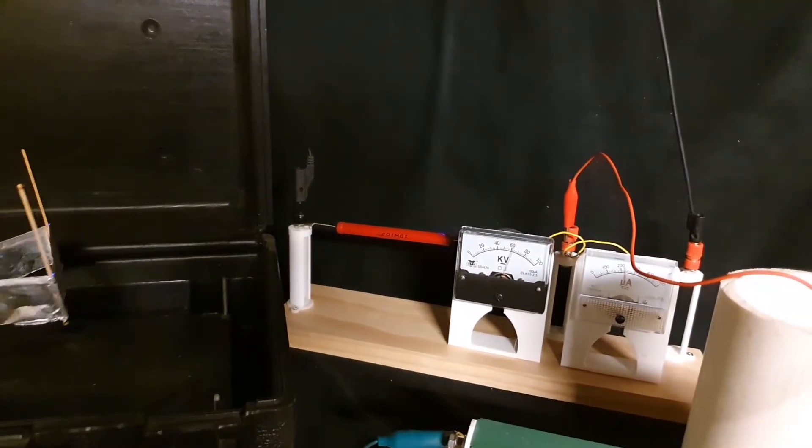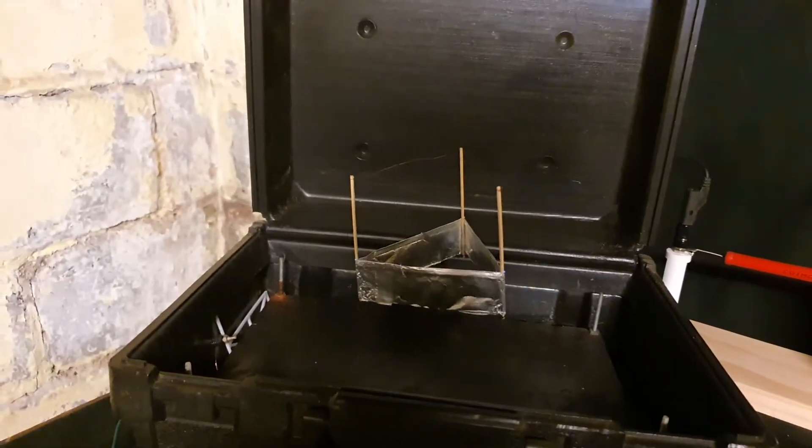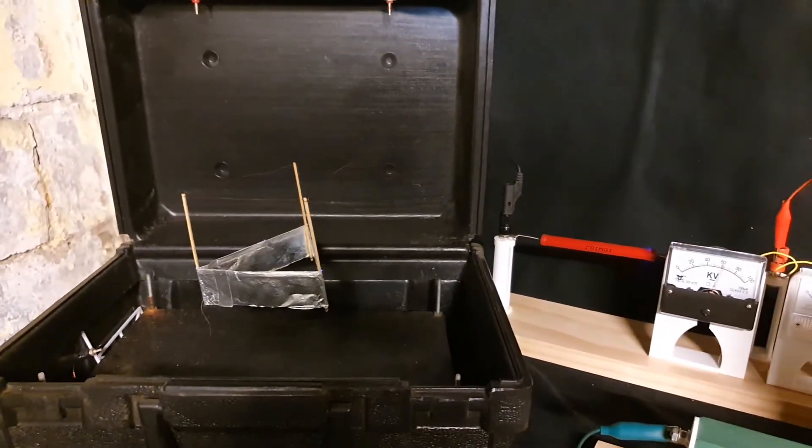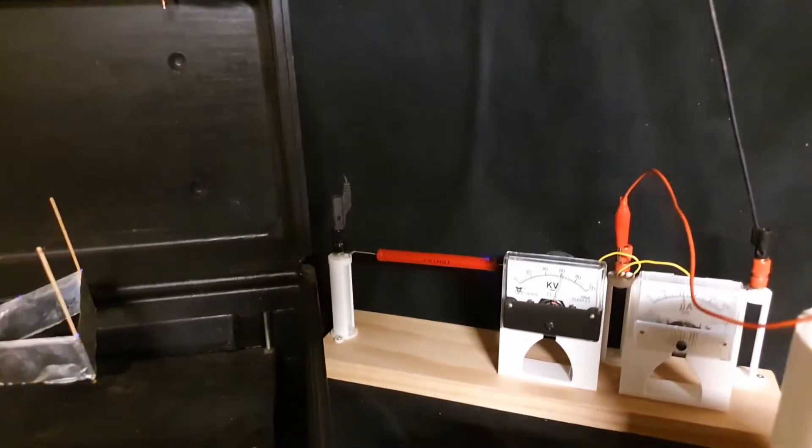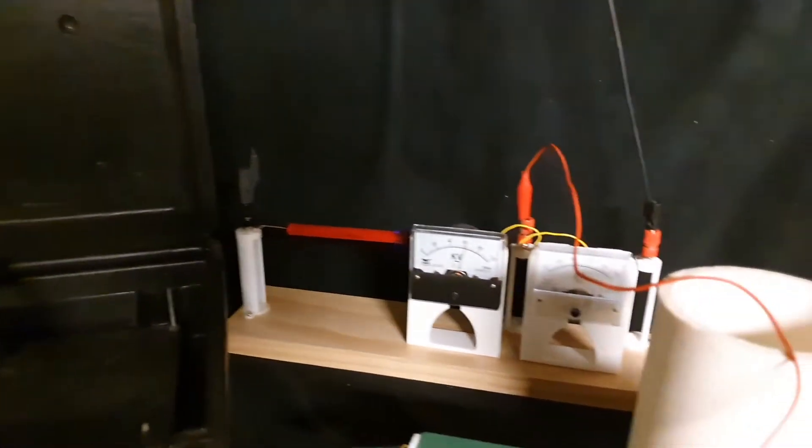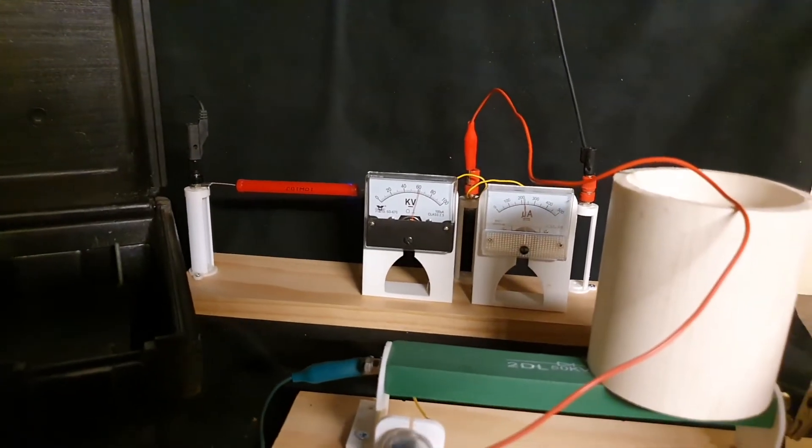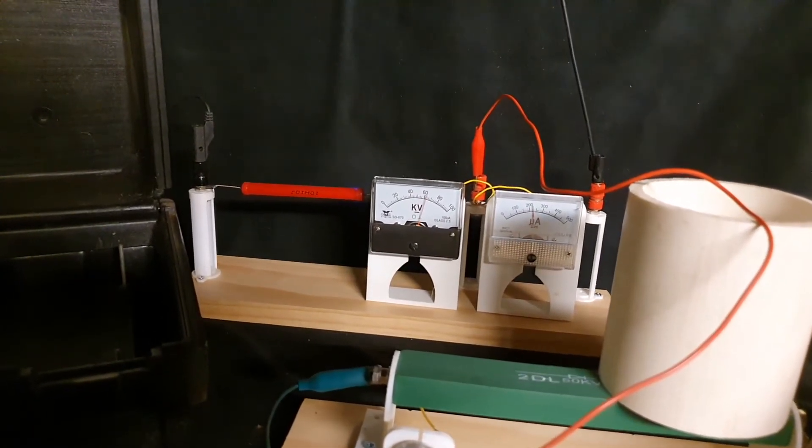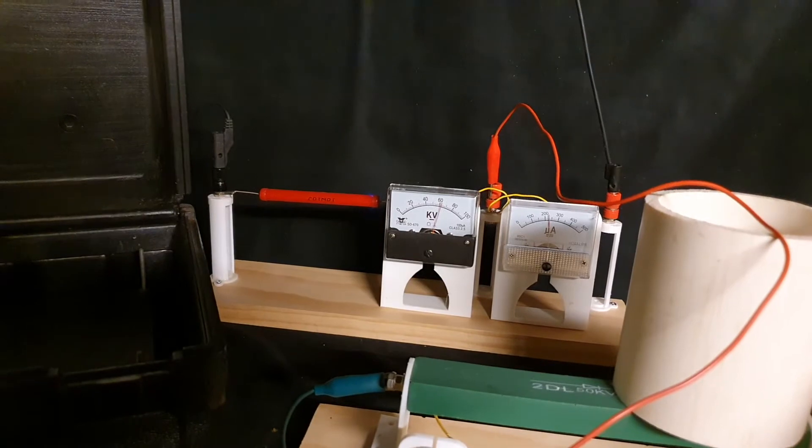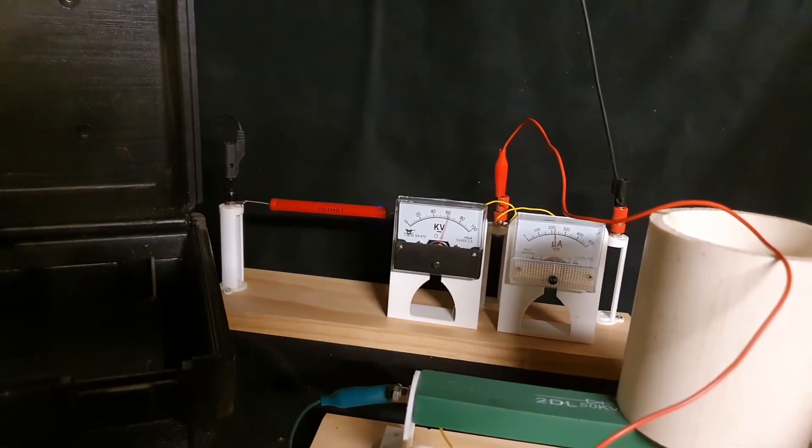We're hovering around 60,000 volts here. We have a lifter flying. You can see a little bit of corona discharge by that high voltage resistor. We're drawing about 200 microamps, a little over, closer to 250 microamps.